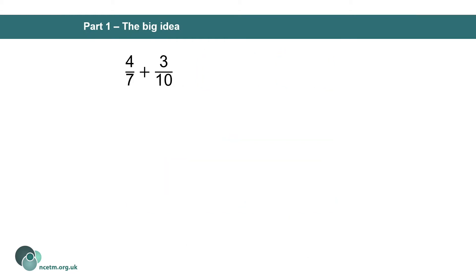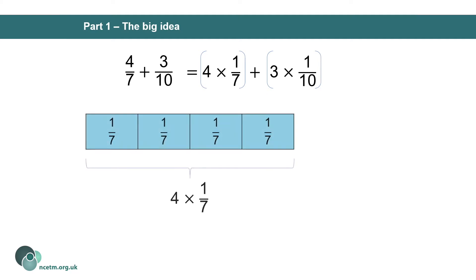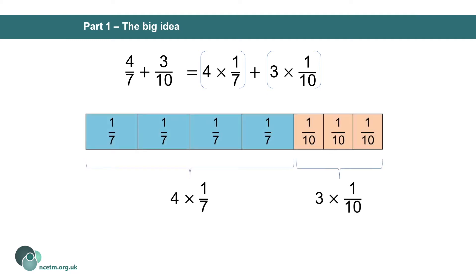In this example, we can't carry this through. We have four lots of one seventh and three lots of one tenth — so we're adding four lots of one unitary value and three lots of a completely different unitary value. This doesn't give us the same outcome as before. This is a key concept that students must understand, and it will help them realize that to solve many problems when adding and subtracting fractions, they will need to make their denominators the same.